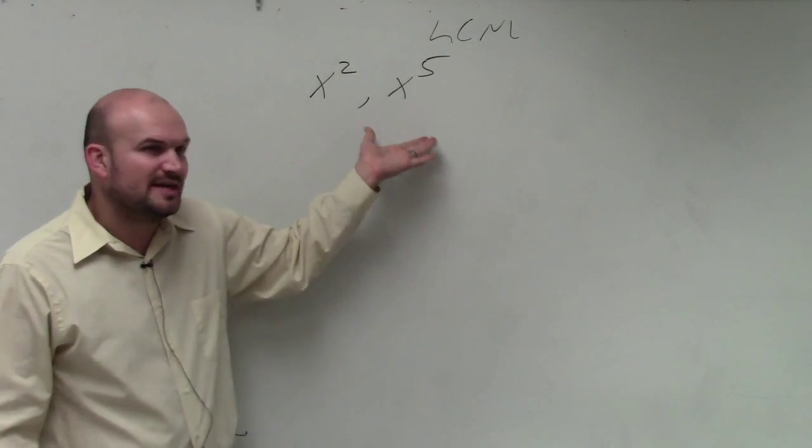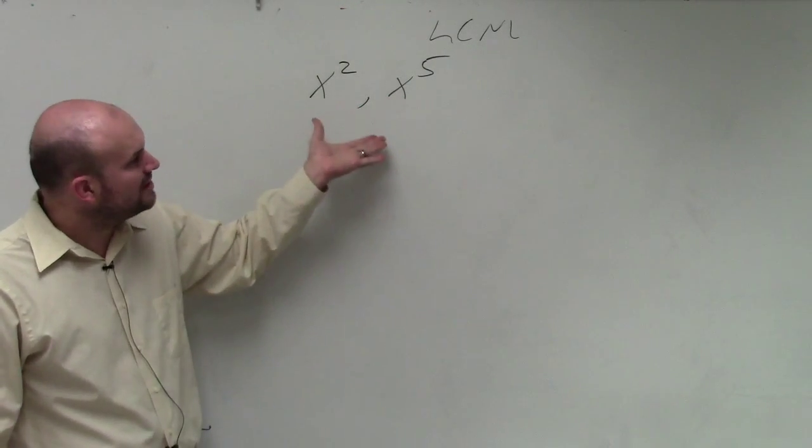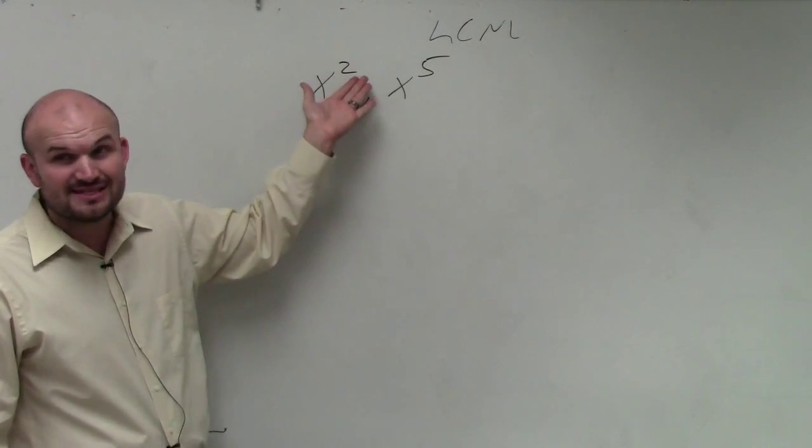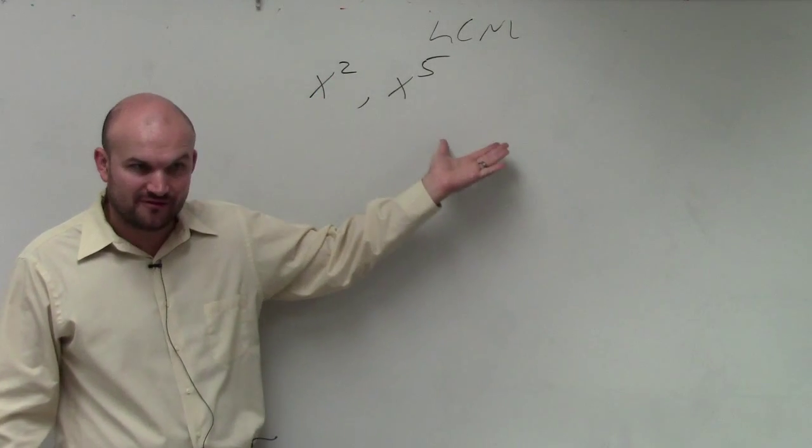This sometimes becomes the hardest one to think about. Because what is the smallest value that x squared divides into, as well as x to the fifth?